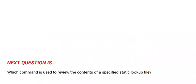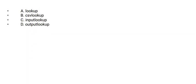Next question is: which command is used to review the contents of a specified static lookup file? Options are: Option A: lookup. Option B: CSV lookup. Option C: inputlookup. Option D: outputlookup. The correct option is Option C.